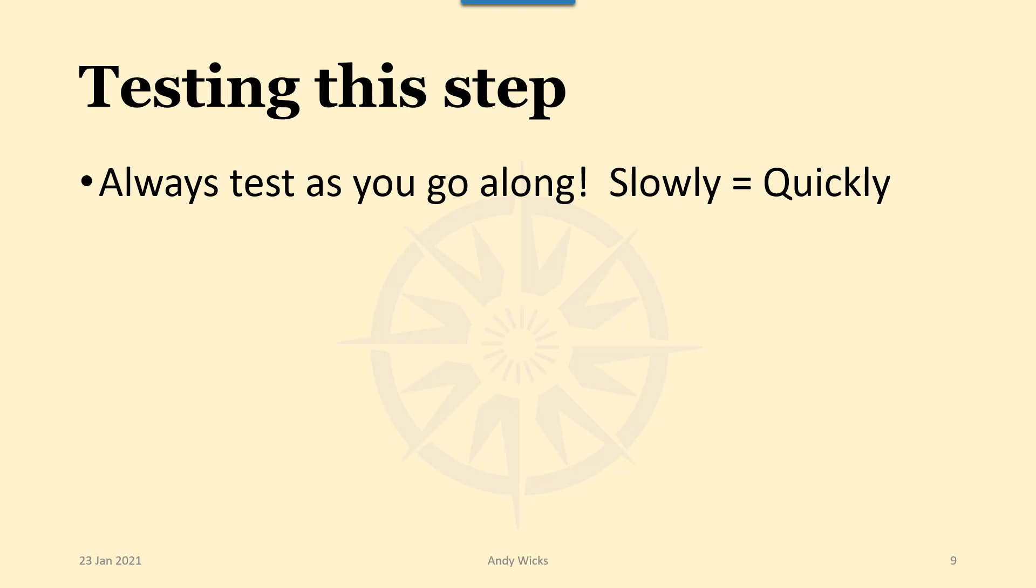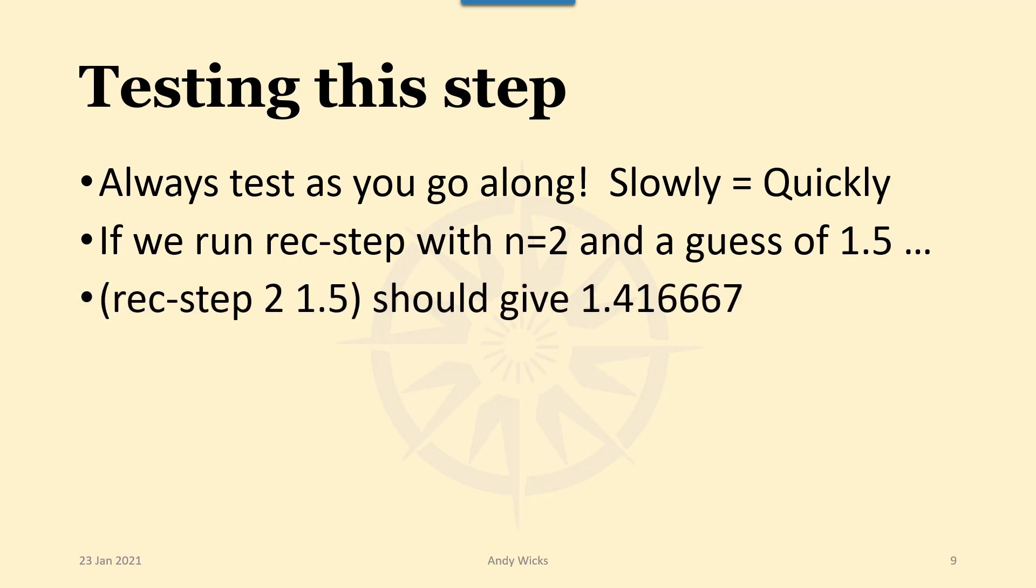Slowly is the same as quickly. Quickly is the same as slowly. If we run rec-step with n equals 2 and a guess of 1.5. Well if we run that once what we'd expect to get is that 1.4166667 that we got in the example above. Then we could feed that into the same thing again. So we could do the rec-step of 2 with the rec-step of 2 on 1.5. In other words we take the output from the first time and feed it in as the guess the second time round.